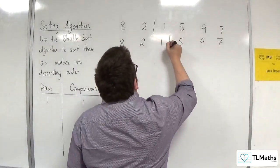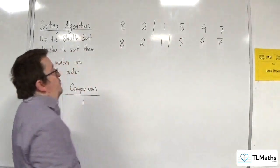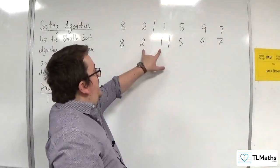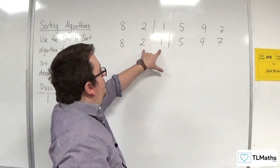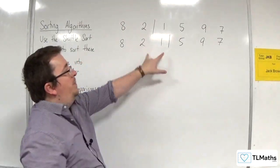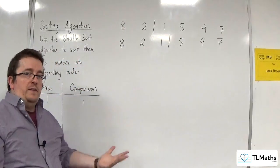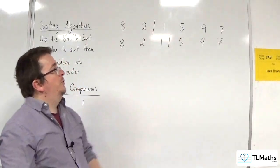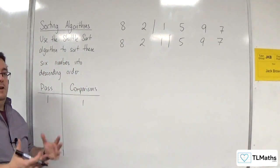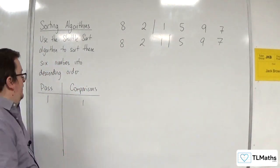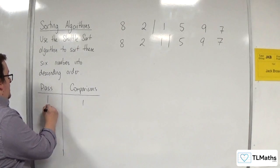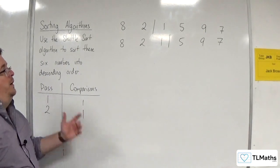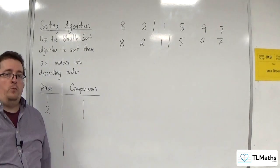Then we bring in the next number of the list: 1. The number 1 is going to get compared with 2, but because they're already in descending order, no swap is necessary. So in the second pass we made one comparison — 1 got compared with 2.